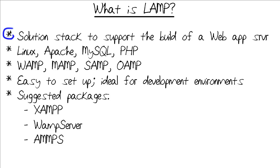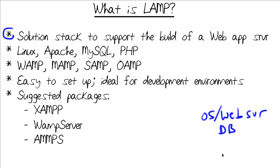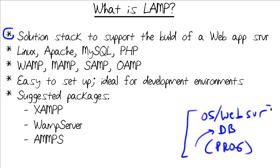LAMP is what's called a solution stack that supports the building of a web application server. The core constituents of any dynamic data-driven website, also called a web app, are web server software associated with a host operating system, some kind of back-end database for read-write data storage and retrieval, and a programming framework that can present web pages dynamically to users, allow for interaction, and plug into that back-end database. The combination of technologies and protocols used in that web application framework is what's called a solution stack.